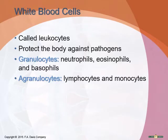White blood cells, also known as leukocytes, are the body's line of defense against bacteria, allergens, viruses, and other infectious pathogens. They are the fewest of all formed elements but play a very important role. Leukocytes are categorized into two groups: granulocytes, which have particles that look like granules of sand, and agranulocytes, which have no granules. Unlike red blood cells, white blood cells contain a nucleus.